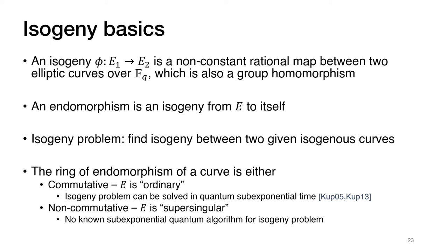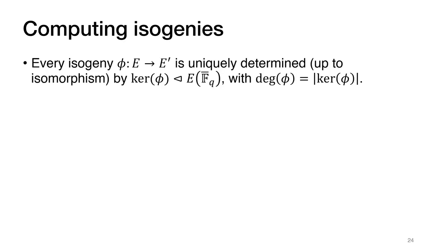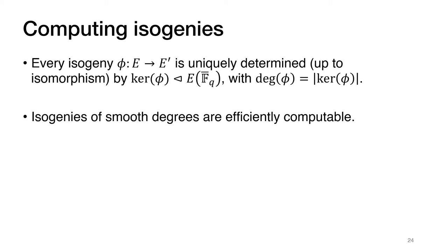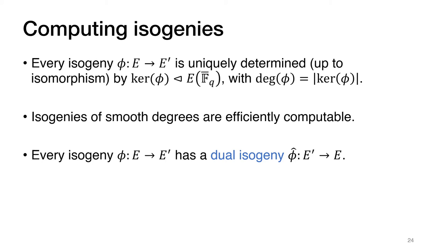This distinction affects the hardness of the isogeny problem. For ordinary curves, the commutative structure can be exploited to solve the isogeny problem in quantum sub-exponential time using Kuperberg's algorithm. For supersingular curves, there is no such structure and the best algorithms run in exponential time even on a quantum computer. Additionally: every isogeny is determined up to isomorphism by its kernel subgroup; its degree equals the order of the kernel; isogenies of smooth degree are efficiently computable using Vélu's formulas; and every isogeny φ from E to E' admits a dual isogeny φ-hat from E' back to E.